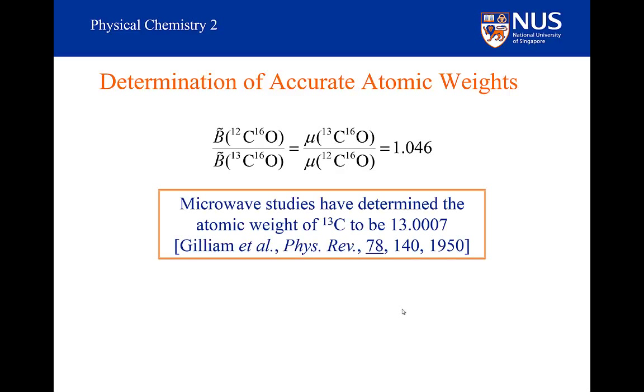And in fact, this was done in 1950, where they used microwave studies to determine the atomic weight of carbon-13, and they found it to be 13.0007. This is a very good method to determine the accurate weights of isotopes.